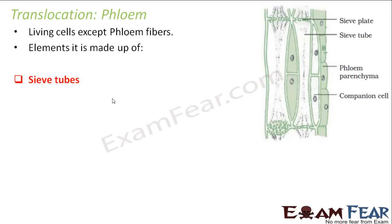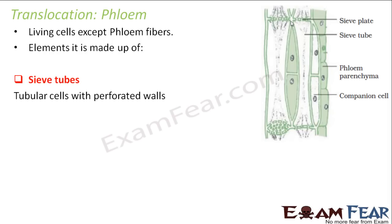They have sieve tubes. These sieve tubes are tubular cells with perforated cell walls. Their cell walls have perforations, and this perforated plate is known as the sieve plate. These perforations are basically known as the sieve — that is why they are called sieve tubes.